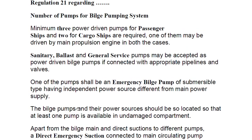Regulation 21 covers the number of pumps for the bilge pumping system. A minimum of three power-driven pumps are required for passenger ships and two for cargo ships. One of them may be driven by the main propulsion engine in both cases; the other should be independent. Sanitary, ballast, and general service pumps may be accepted as power-driven bilge pumps if connected with appropriate pipelines and valves.